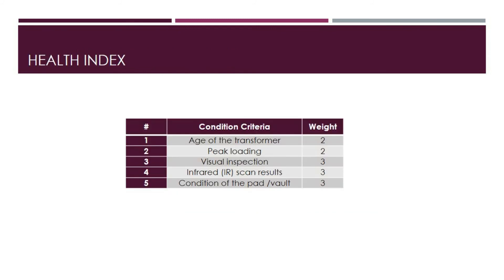Now let us look at the health index weights. We assign the condition criteria — age of the transformer and peak loading — a weight of 2. The visual inspection, the IR scans, and the condition of the pad or vault for pad mount or vault transformers are weighted with a weight of 3.